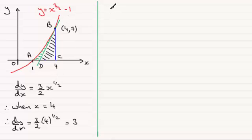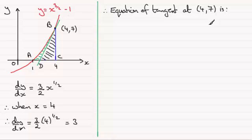So knowing that we've got everything we need for the equation of straight line, I'm going to use the form y minus y1 equals m bracket x minus x1. Therefore, the equation of the tangent at (4,7), the equation is going to be y minus 7 equals 3 times x minus 4.